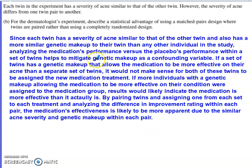Genetic makeup could be a potential confounding variable. If a set of twins has genetics that makes the medication more effective, you wouldn't want both twins in the medication group, as results would suggest the medication is more effective than it really is. By pairing twins and assigning one from each set to each treatment, then analyzing the difference in improvement rating within each pair, we mitigate genetic makeup as a confounding variable, making the medication's true effectiveness more apparent.